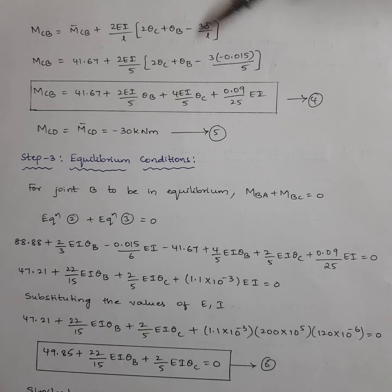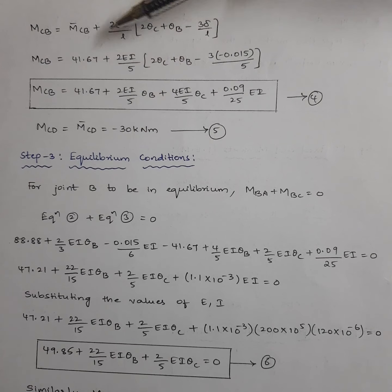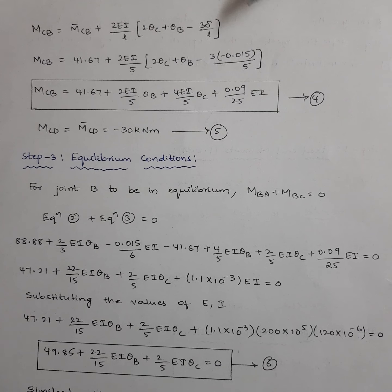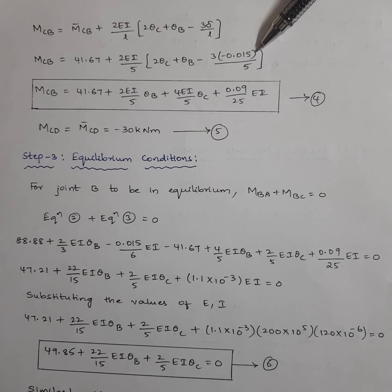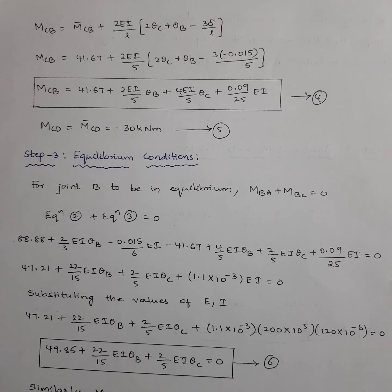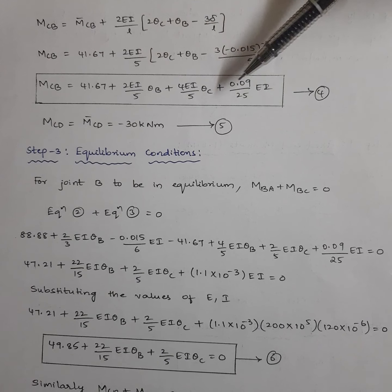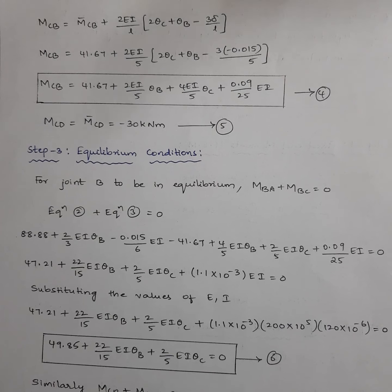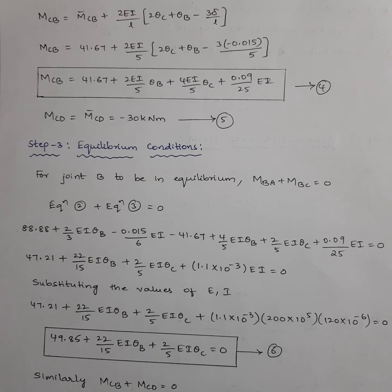For M_CB: M̄CB + (2EI/L)(2θC + θB − 3Δ/L). Again delta is minus 0.015 because B is on the left side in span BC. Substitute M̄CB = 41.67 and solve to get equation 4. M_CD = M̄CD = minus 30 kN·m (already known, no unknowns).